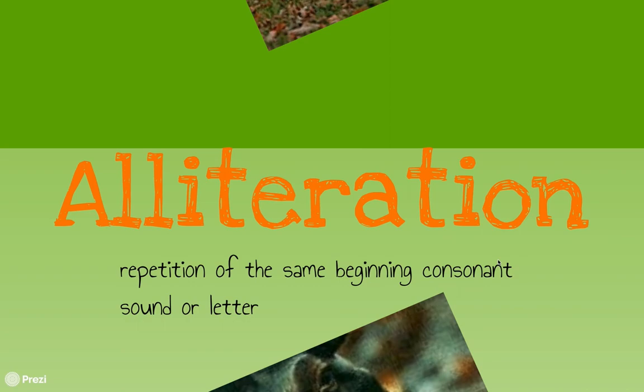For personification — giving human qualities to something non-human — here's an example: 'The moon danced across the night sky.' The moon wouldn't typically dance. Another example could be 'the trees bowed in the wind,' like they're bending over and bowing.